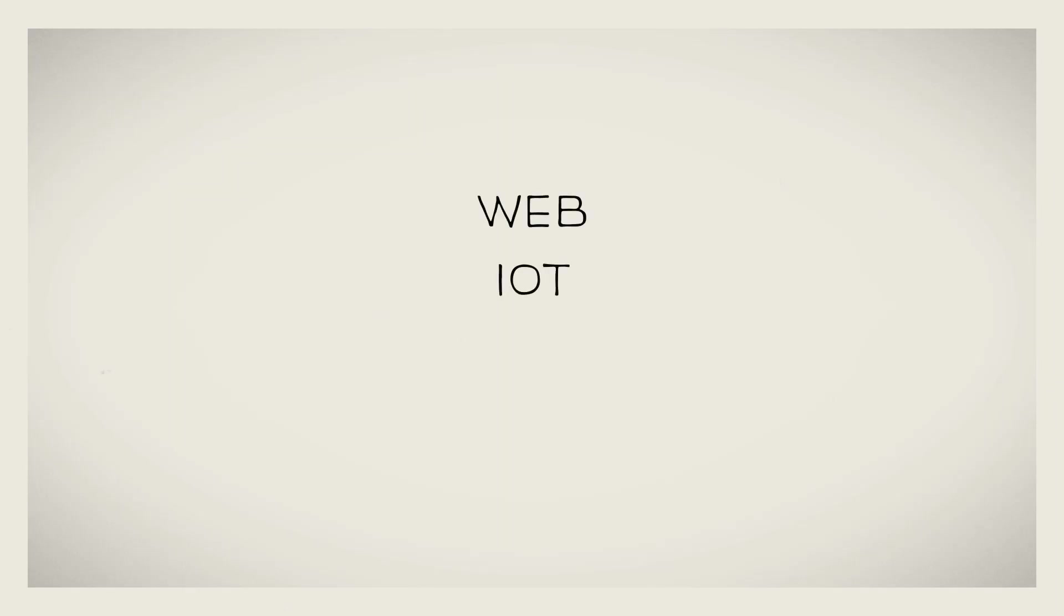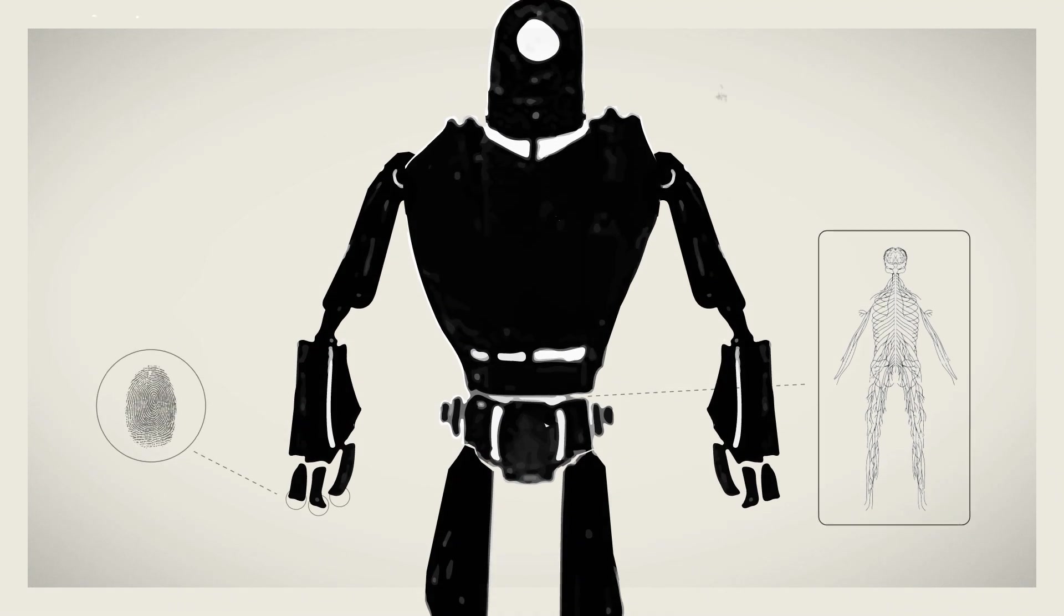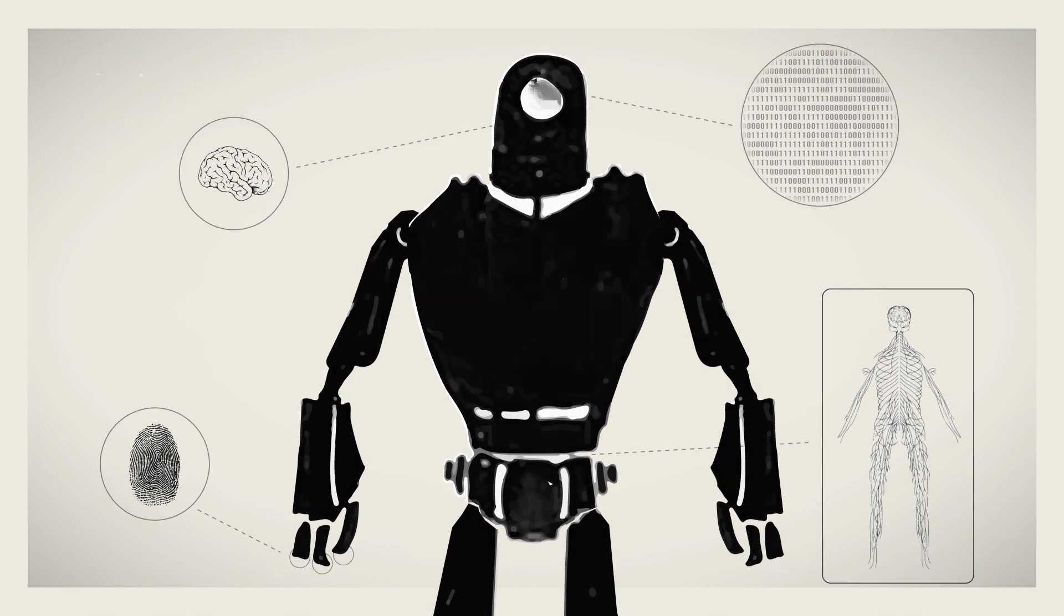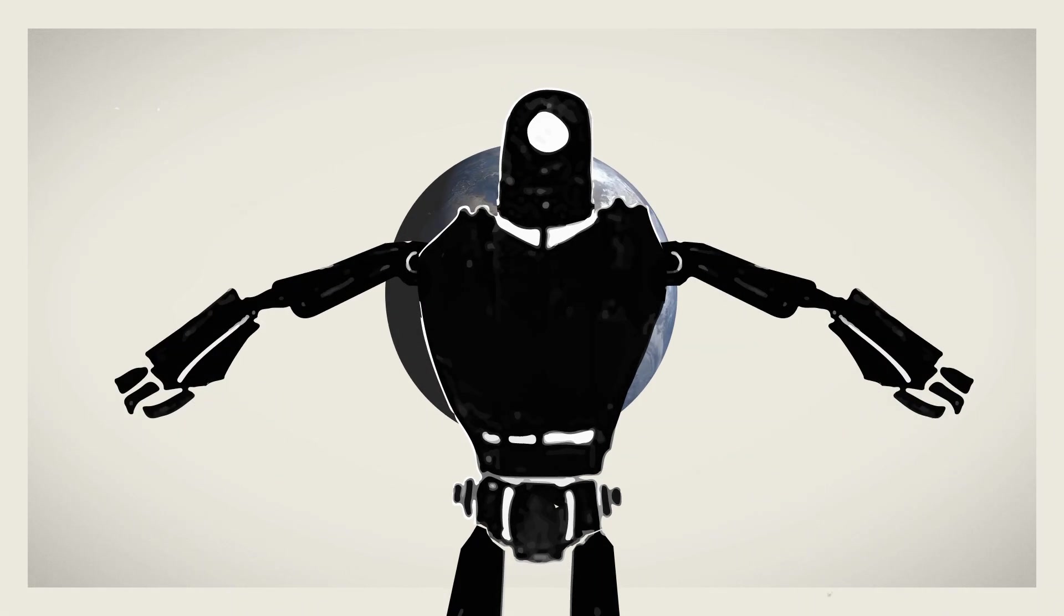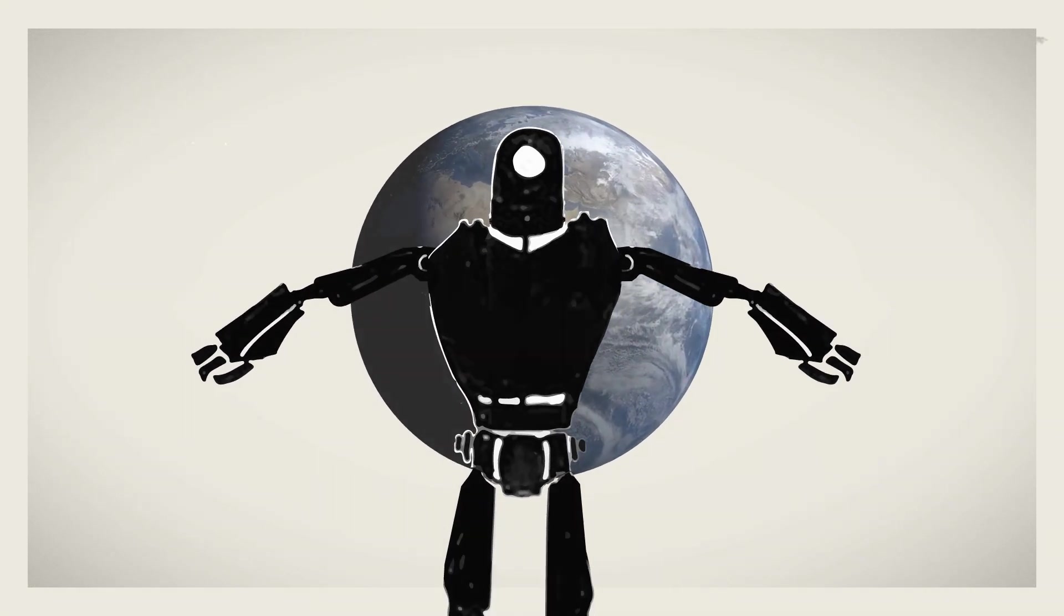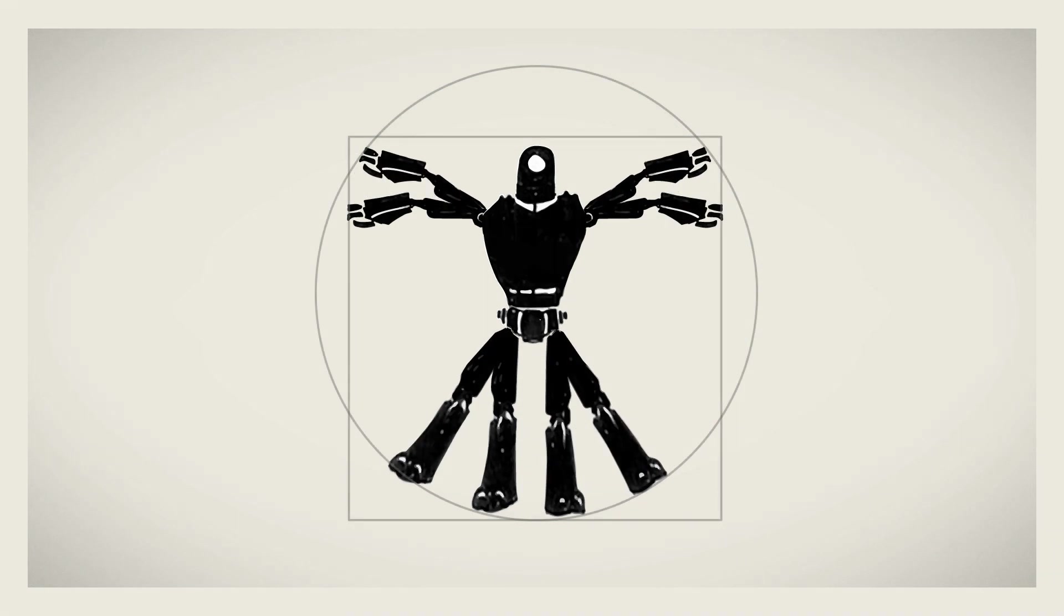Web, IoT, Big Data and AI represent the nervous system, the senses, the memory and the brain of a super-being who will control the planet in the future and will escape human understanding. The moment this happens will be called Singularity.